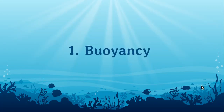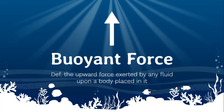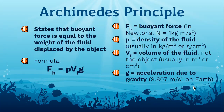First, we'll be covering buoyancy. This is one of the more important topics because buoyancy tells you whether or not your boat will float or sink. Buoyant force is defined as the upward force exerted by any fluid upon a body placed in it. The Archimedes Principle can help us calculate the amount of buoyant force placed upon an object. The principle basically states that buoyant force is equal to the weight of the fluid displaced by the object and can be represented by this formula.